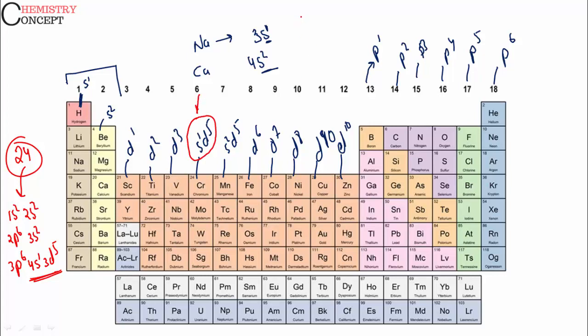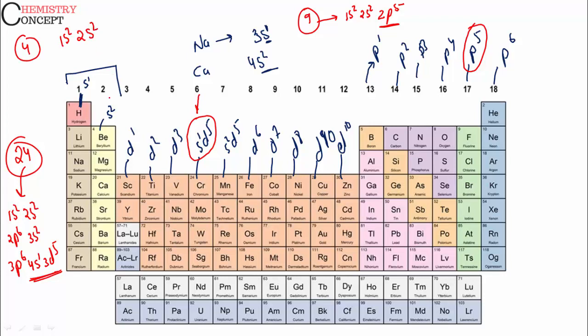Similarly, for an element with atomic number 9 we write: 1s2, 2s2, 2p5. The last electron enters the p sub-shell — it is a p-block element. For atomic number 4: 1s2, 2s2. It belongs to S2, so it belongs to group 2. This is beryllium.